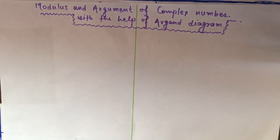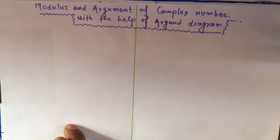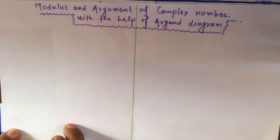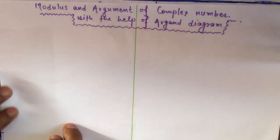In this lecture we are going to see the modulus and argument of a complex number. Using the Argand diagram, we will understand what the Argand plane is, and from there we will see what the argument is and what the modulus of any complex number is.